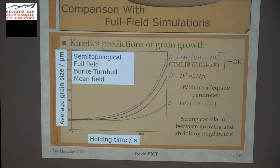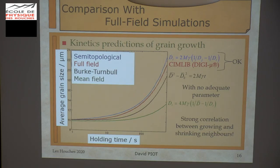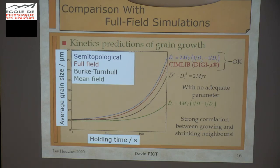We also made a comparison in the simple pure grain growth case with a few available models. In red, as reference, a computation made by CEMIM or DIGIM — more or less the same. In blue, a prediction with the semi-topological model. You can compare with the standard mean field model, which is much lower. And here you have the Burke-Turnbull estimation. All these computations are made using exactly the same M and the same gamma — no adjusted parameters. The conclusion is that we have a strong correlation between growing and shrinking neighbors in the microstructure, which is quite normal.